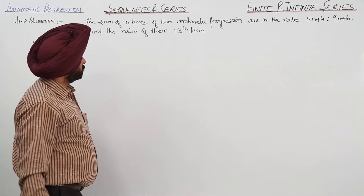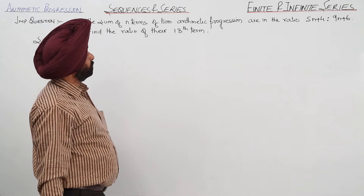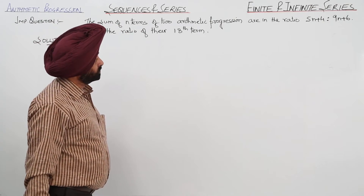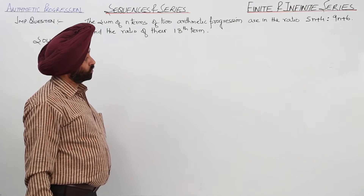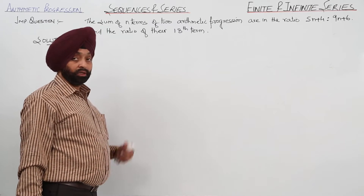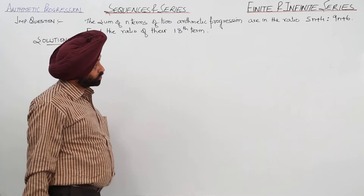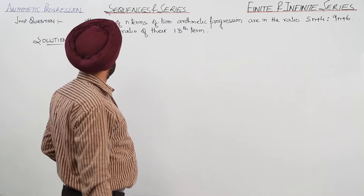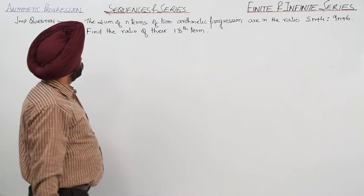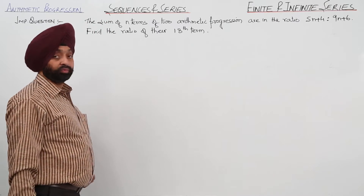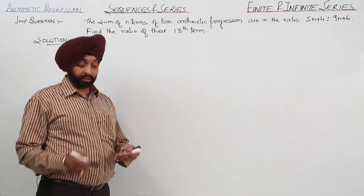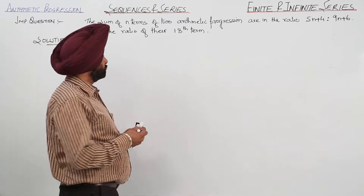The sum of n terms of 2 arithmetic progressions are in the ratio 5n plus 4 to 9n plus 6. We have to find the ratio of their 18th terms.